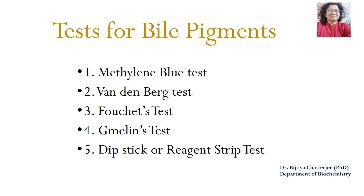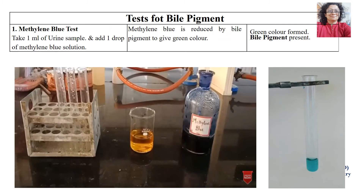The tests for bile pigments include the methylene blue test, Van den Berg's test, Fouchet's test, Gmelin's test, and the dipstick or reagent strip test. For the methylene blue test, we take 1 ml of the patient's urine sample and add 1 drop of methylene blue solution. The methylene blue is reduced by bile pigments to give a green colour; a colour change to green indicates the presence of bile pigments.